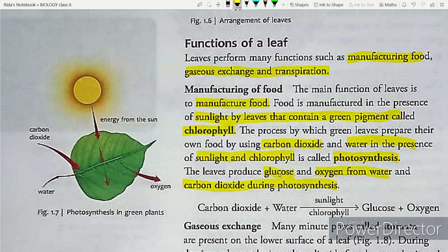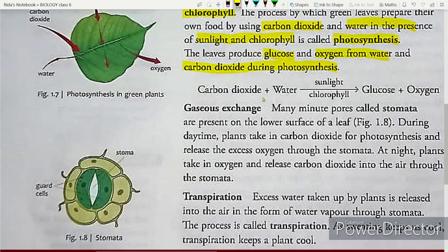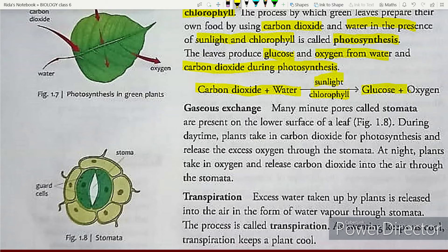After photosynthesis, glucose and oxygen are produced from water and carbon dioxide. The equation is: carbon dioxide plus water, in the presence of sunlight and chlorophyll, gives the result of glucose plus oxygen.